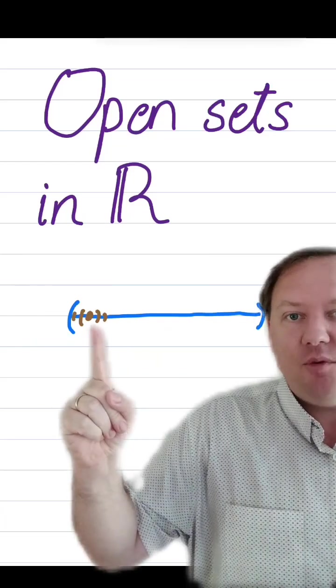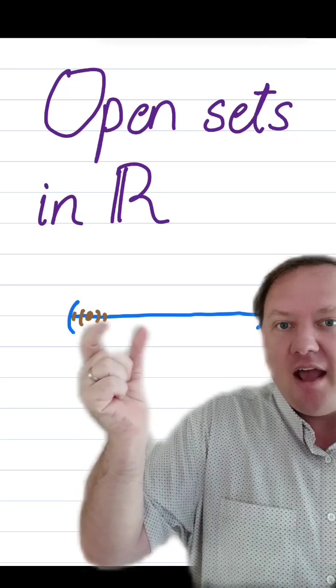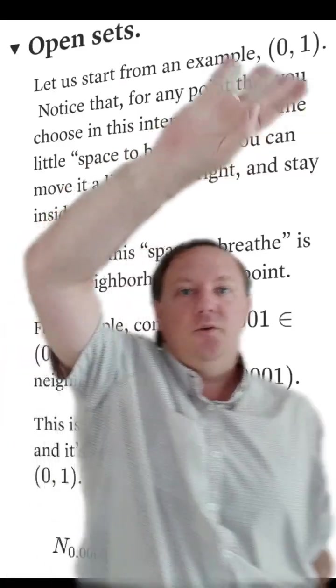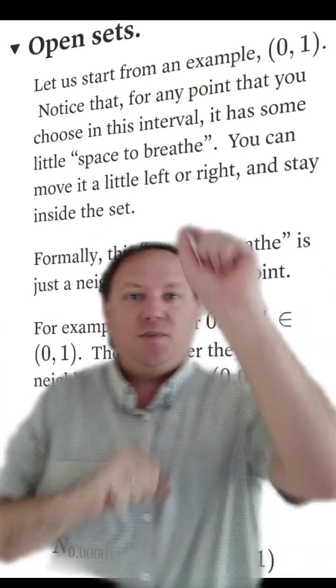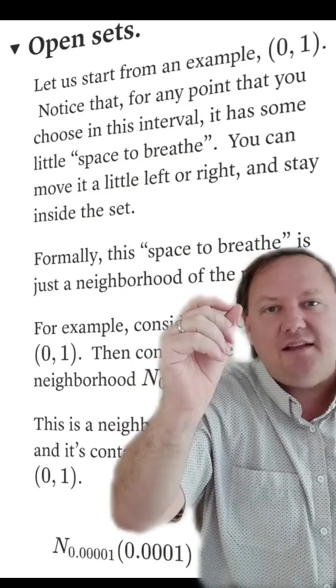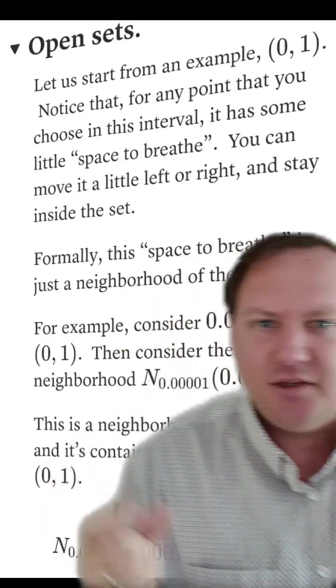has a little bit of room to breathe. So if you take the interval from 0 to 1 exclusive on both ends, pick any point, you can jostle it around left or right, and it'll stay inside of the set as long as the jostling is small enough.